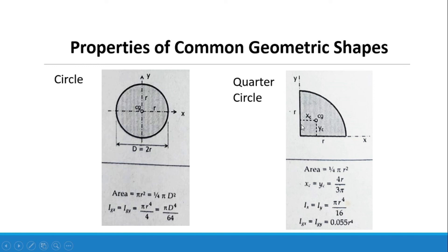Next, quarter circle, which is one fourth of the shaded area of a circle. The area equals one fourth pi r squared. x sub c equals y sub c, and both equal 4r over 3 pi. The moment of inertia along x and y are the same, equal to pi r to the fourth over 16. The centroidal moments I sub gx equals I sub gy equals 0.055r to the fourth.